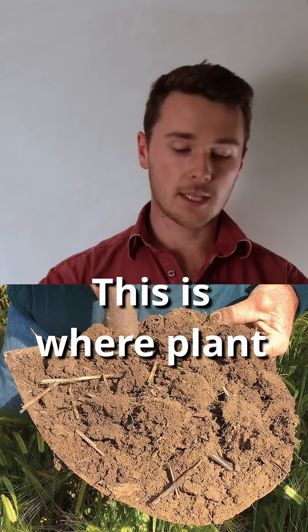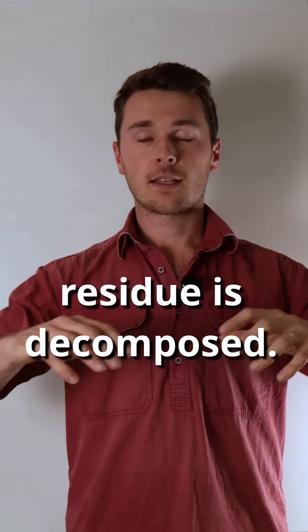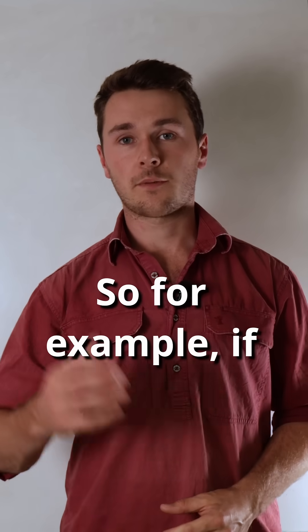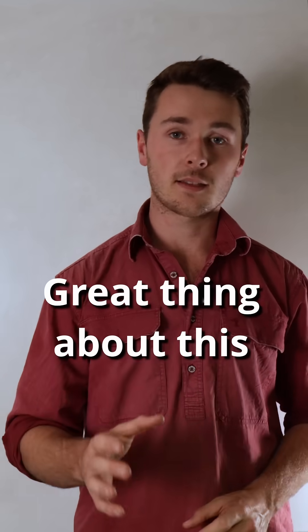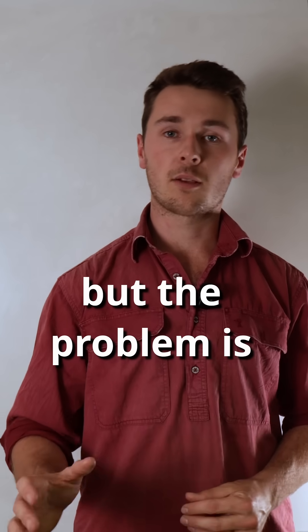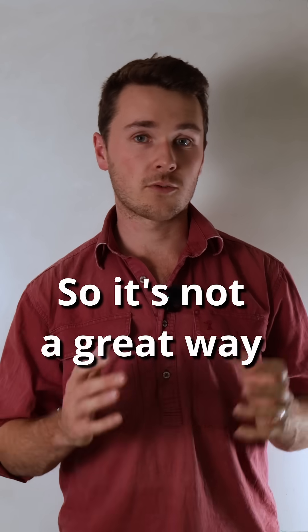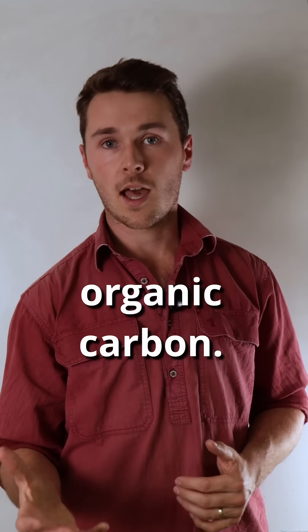So the first one is decomposition. This is where plant litter or animal residue is decomposed. For example, if a cover crop is terminated, the litter above ground and the roots decompose. Great thing about this is that it feeds soil biology, but the problem is it's only 8% efficient. So it's not a great way to try and build soil organic carbon.